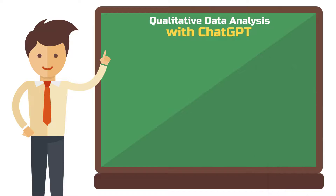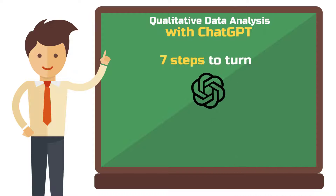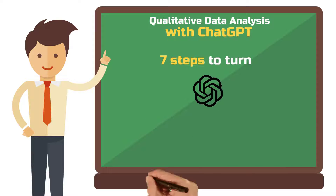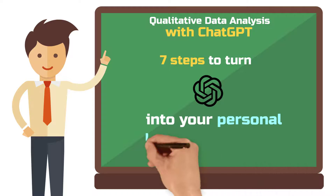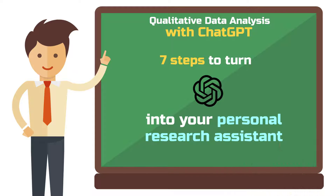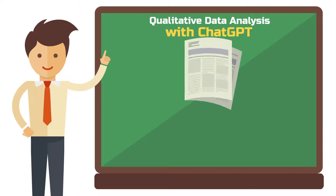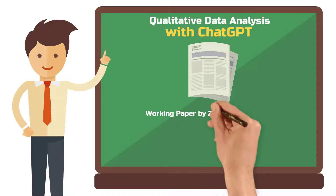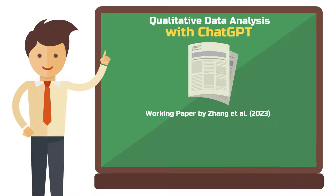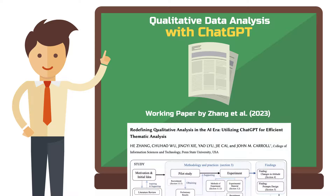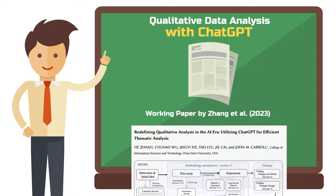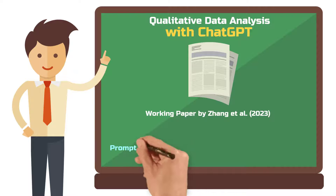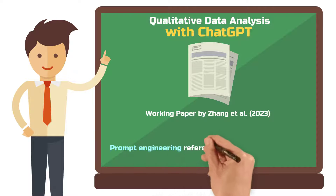In the following, we will look at seven steps to turn ChatGPT into your personal research assistant. These steps are loosely based on the working paper by Zhang and colleagues from Penn State University, where the authors summarized the best practices in prompt engineering from 17 qualitative researchers. Prompt engineering refers to crafting the instructions you give to ChatGPT and other large language models.